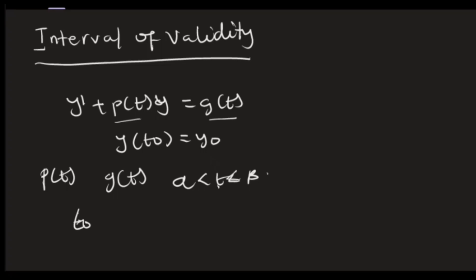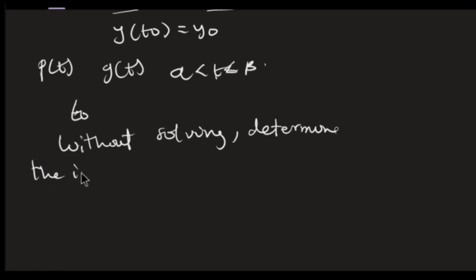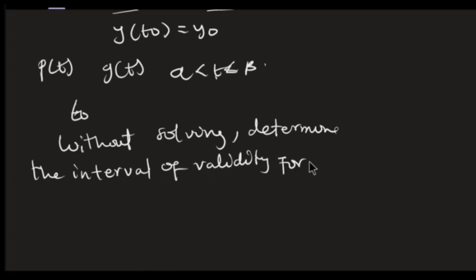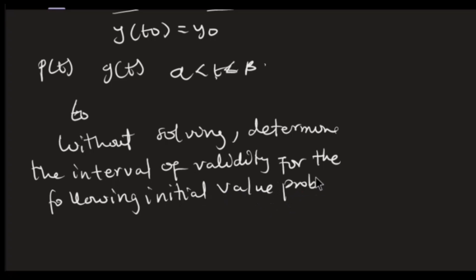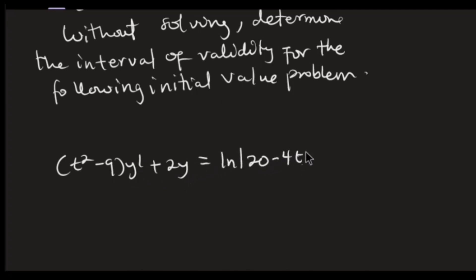Let me use a problem to show you how to do this. Without solving, determine the interval of validity for the following initial value problem: t squared minus 9 multiplying y prime plus 2y equals the natural log of the expression 20 minus 4t. The initial condition is y(4) = negative 3.